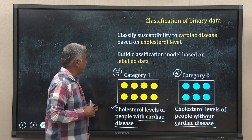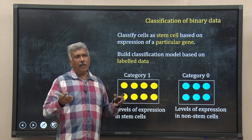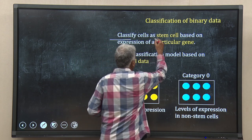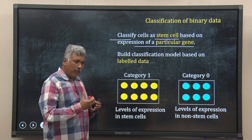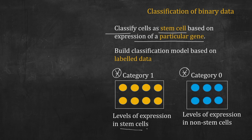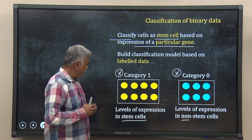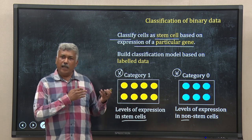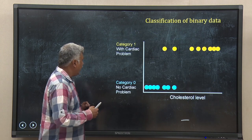Take another example: I want to classify cells as stem cells or not, based on the expression of a particular stem cell marker gene. To create the classifier, I need a labeled data set with two categories — category 1 for stem cells and category 0 for non-stem cells. In both categories, I know the expression level of the stem cell marker gene. Now let us move further with the blood cholesterol level example, where we want to classify people based on cholesterol level into susceptible or not susceptible to cardiac disease.